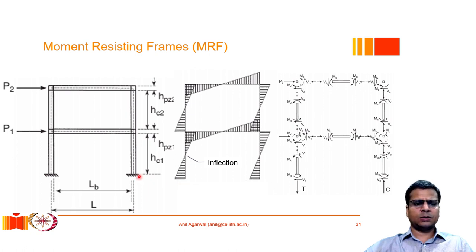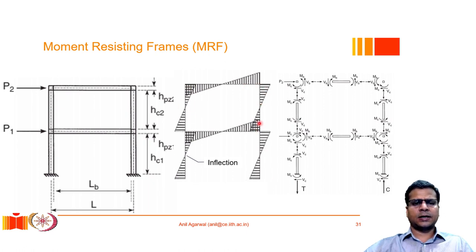A moment resistance frame works as follows: if we have a frame with lateral forces P1 and P2 acting on it, the frame will deflect laterally and develop a bending moment diagram. As anyone familiar with basic structural analysis would know, there will be points of inflection in each member, meaning each member will essentially be under a double curvature scenario.